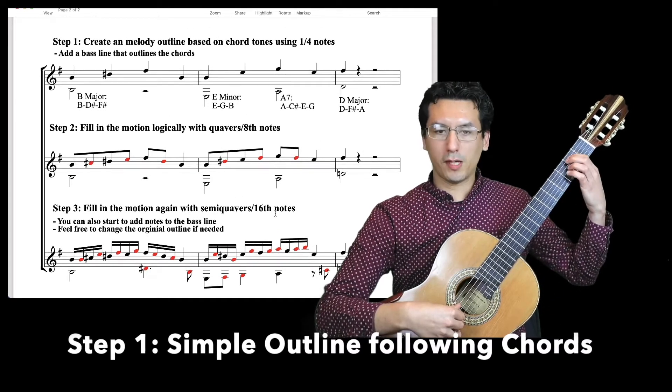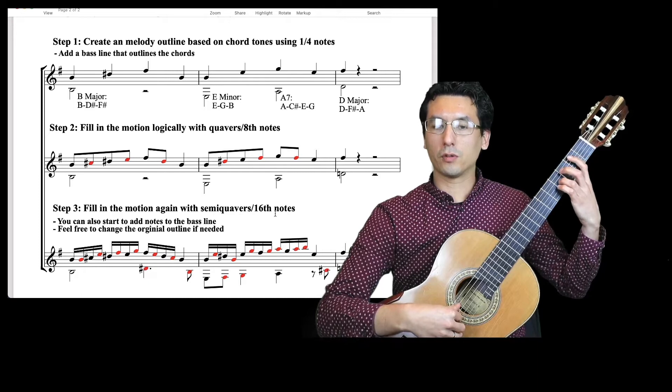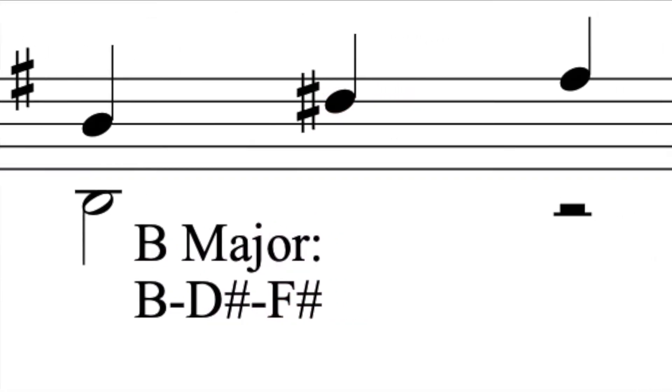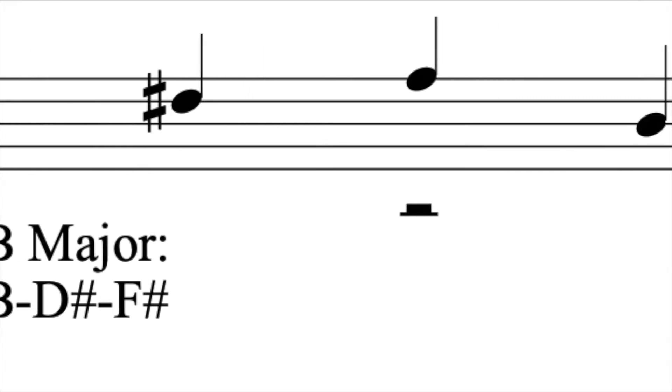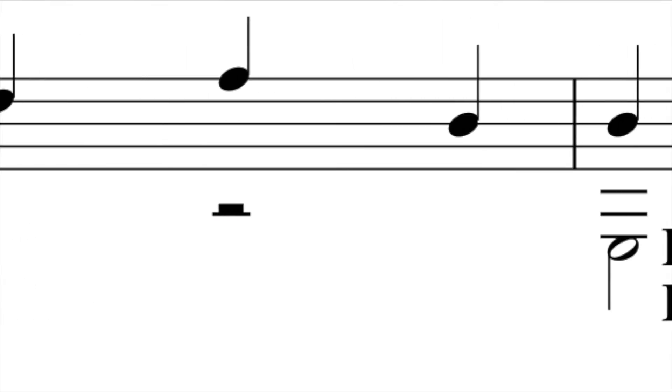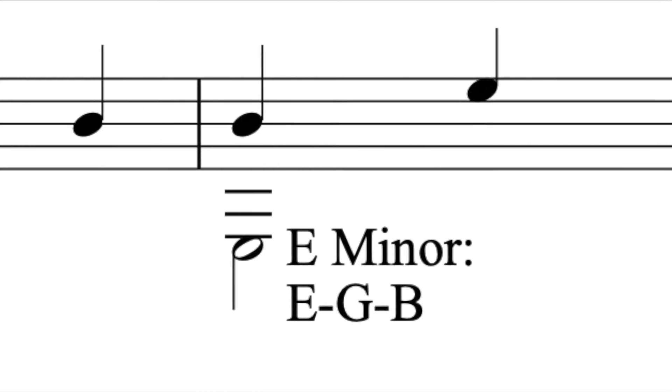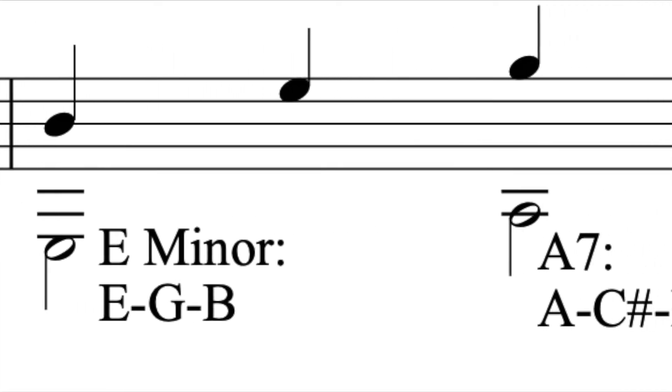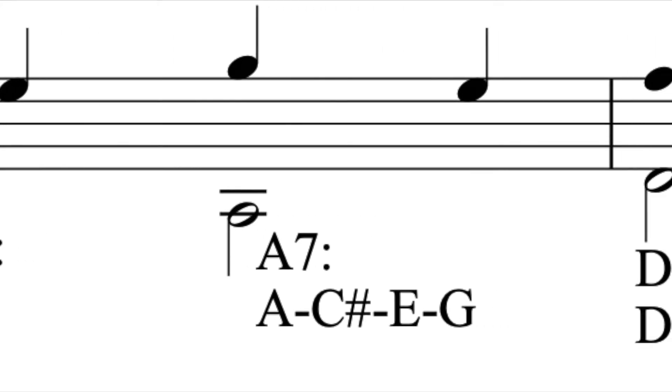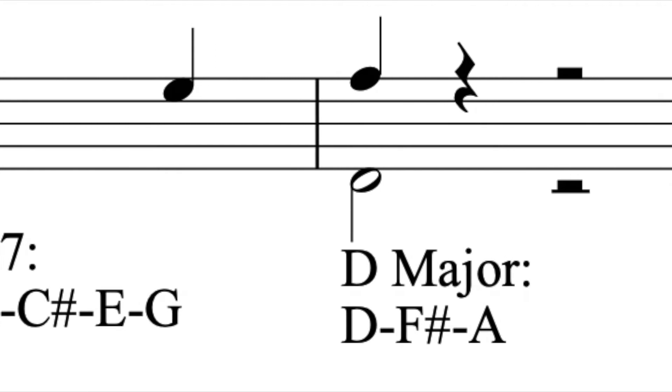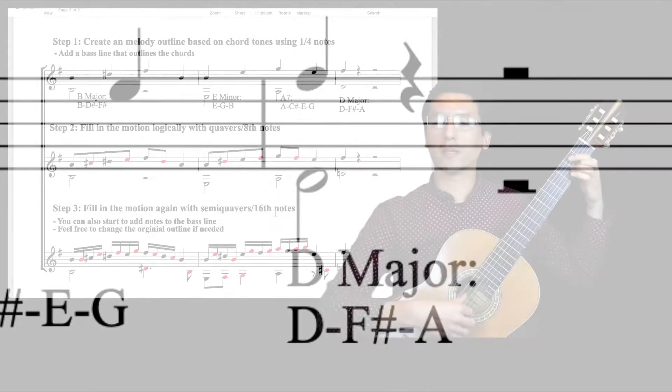So we start with a simple outline of, so our first chord is B major. And we're starting on a B, D sharp, F sharp, B. And then we go to E minor, so E, G and B. So we can choose B and E, with E in the bass. And then we have A7, D and F sharp.